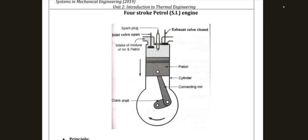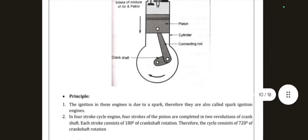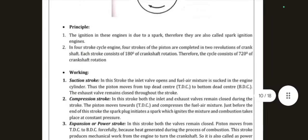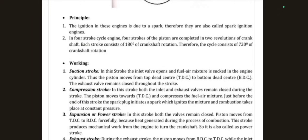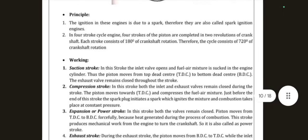For your answer, first draw the diagram, then write the principle and constructional elements, then come to the working steps — the four strokes. In a four-stroke cycle engine, four strokes of the piston are completed in two revolutions of the crankshaft. Each stroke consists of 180 degrees of crankshaft rotation, so a complete cycle is 720 degrees.